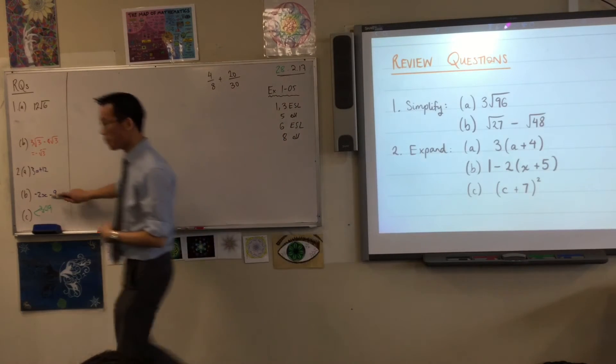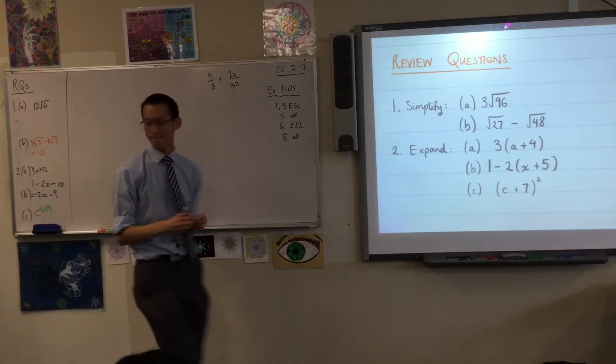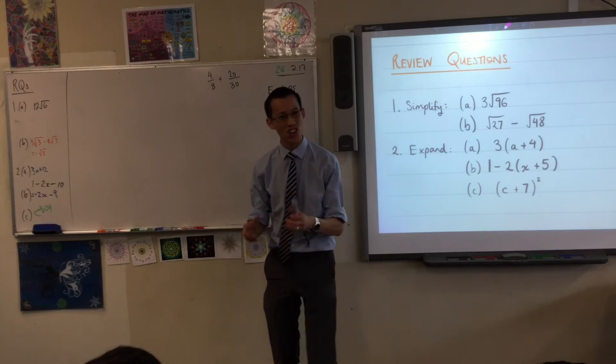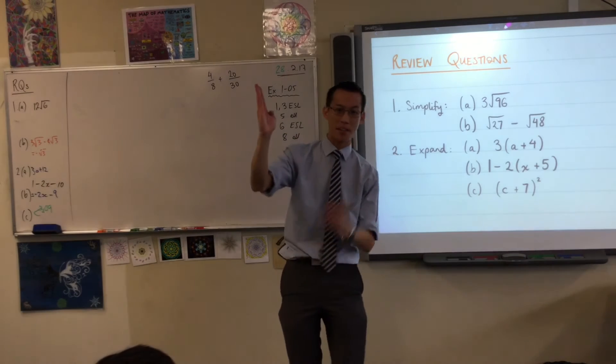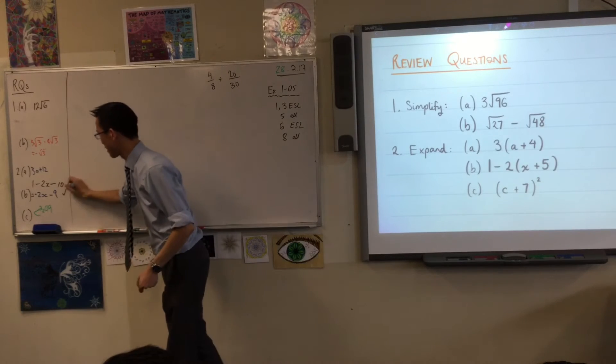So, it should be 1. I might write this down. So, before this line, it's actually 1 minus 2x minus 10. Do you agree with that? Does that equal minus 2x minus 9? Sure, I guess. I think it does. You're collecting like terms. The 1 and the minus 10, you can put them together, which is what you get here. Fantastic. All right.